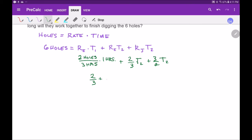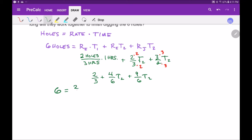So now we have two thirds of a hole plus, oh it's common denominator time. So times two on the bottom, times two on the top, times three on the top, and we will say four over six t2 plus nine over six t2. So we can combine those now and we will say six equals two thirds plus 13 over six t2.